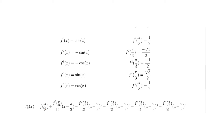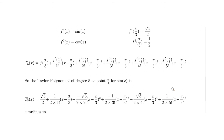f(π/3) = √3/2; the first derivative at π/3 is 1/2; the second derivative is -√3/2; the third is -1/2; the fourth derivative gives √3/2; and the fifth derivative is 1/2. Let's put all of that in now and see where it takes us.